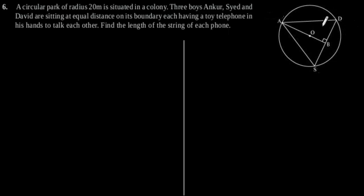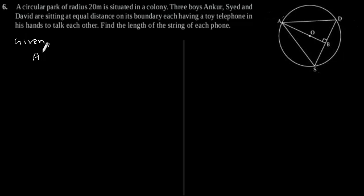Suppose this is our circular path, and Ankur, Syed and David are sitting at equal distance on its boundary. We need to find the length of the string of each phone, that is AD, AS, or SD. It is given that AS equals SD equals AD. Therefore, triangle ASD is an equilateral triangle.